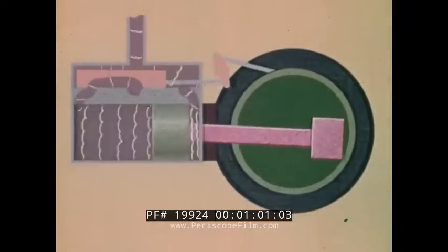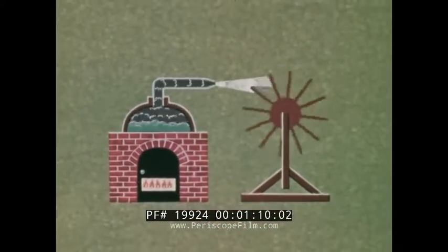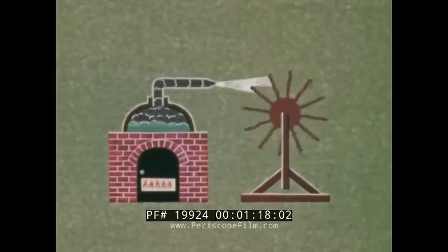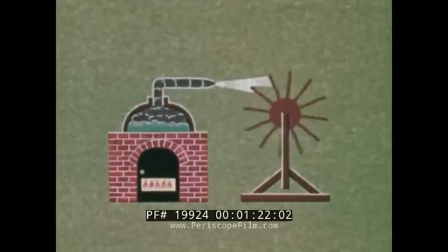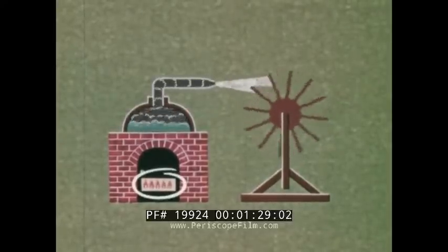Rotary motion can also be produced by taking the steam right out of the boiler, putting it through a nozzle to increase its velocity, and directing it against blades on a wheel, thus converting heat energy into mechanical energy. So the steam turbine was born. It provided instant, direct rotary motion. This is an external combustion engine, with the fuel burned outside the part where the output power is produced.